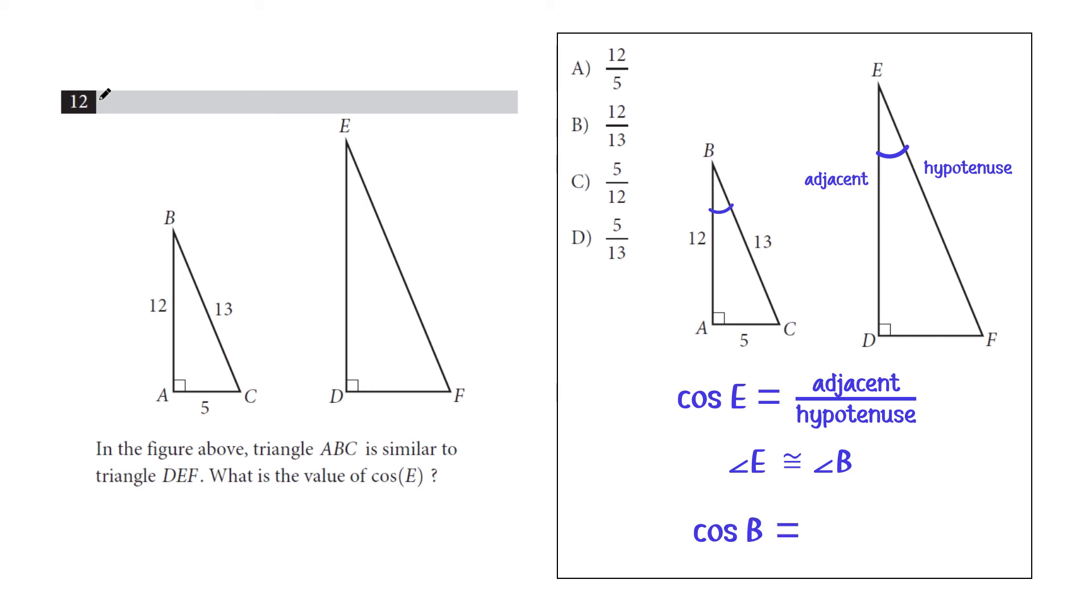Well, cosine of B being adjacent over hypotenuse is going to be 12 over 13. And this is why it's so important to understand what similar means. And so that's going to be answer choice B.